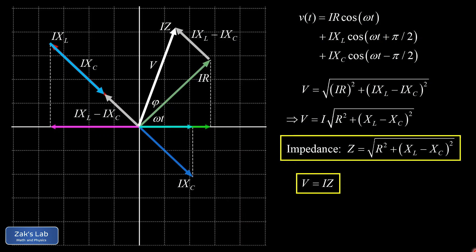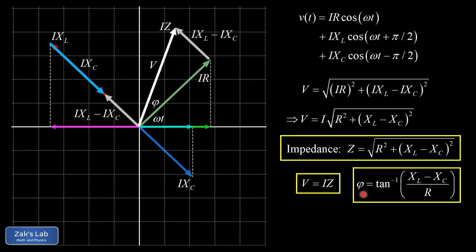The phase angle φ between the reference direction and the net voltage phasor is given by φ = arctan[(X_L − X_C) / R]. The current phasor points in the same direction as the resistance phasor, so the phase angle between total current and total voltage depends on the driving frequency. If capacitive reactance exceeds inductive reactance, the total voltage phasor lags the current; the inverse tangent produces a negative sign automatically.